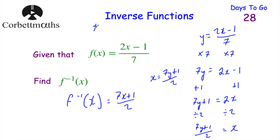Let's check: if x = 25, then 2 × 25 = 50, minus 1 = 49, divided by 7 = 7. Then applying the inverse: 7 × 7 = 49, plus 1 = 50, divided by 2 = 25. That's our inverse function confirmed.